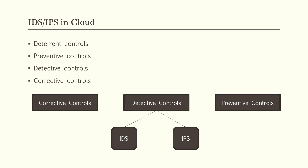So where are IDS and IPS actually deployed in the cloud? There are four main security controls in the cloud: deterrent, preventive, detective, and corrective. IDS and IPS technologies would be placed in the detective security controls. All security mechanisms are placed within these four security controls of the cloud.